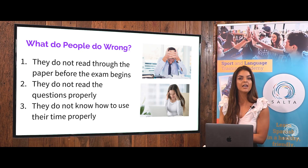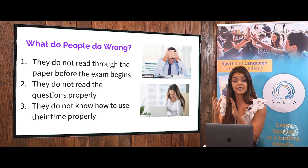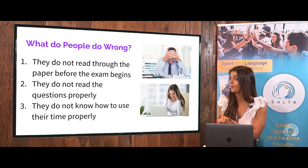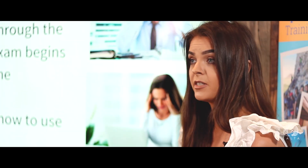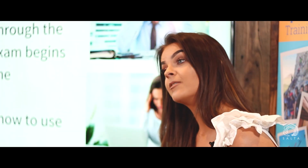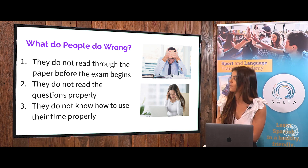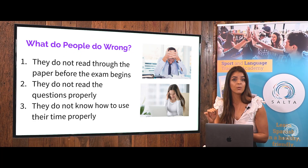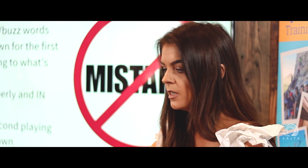So what do people do wrong? First things first: every single teacher will tell you for every single subject — read the question properly. For your aural exam, that involves reading through the entire paper before the exam begins. The second the superintendent tells you that you can open or read through your paper, use that time to actually read through it. Don't sit there and panic or try to make eye contact with your friend. Read the questions properly, highlight the question words — does it say why, how, what, where — and make sure you're giving the examiner the correct information.